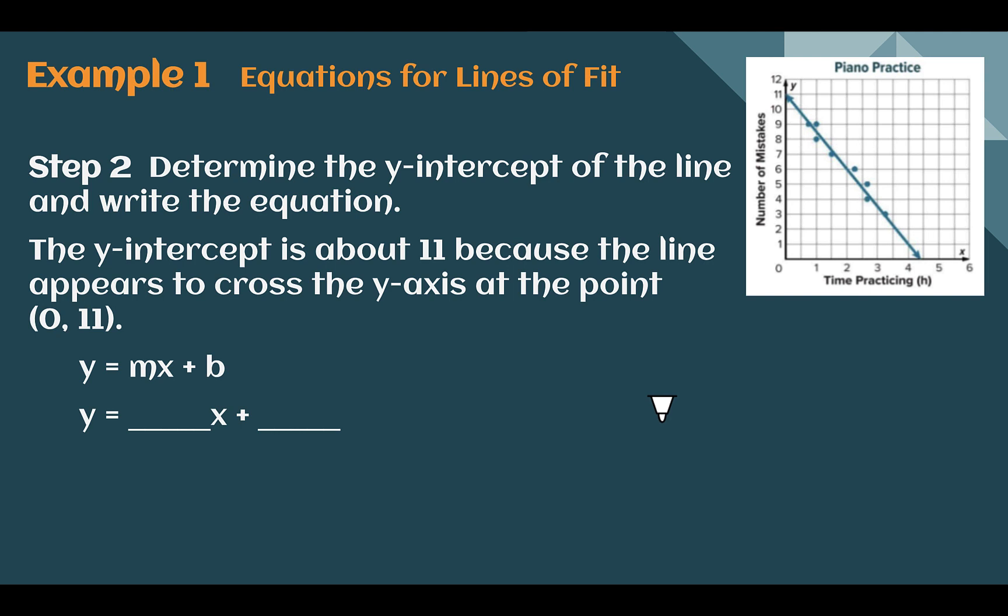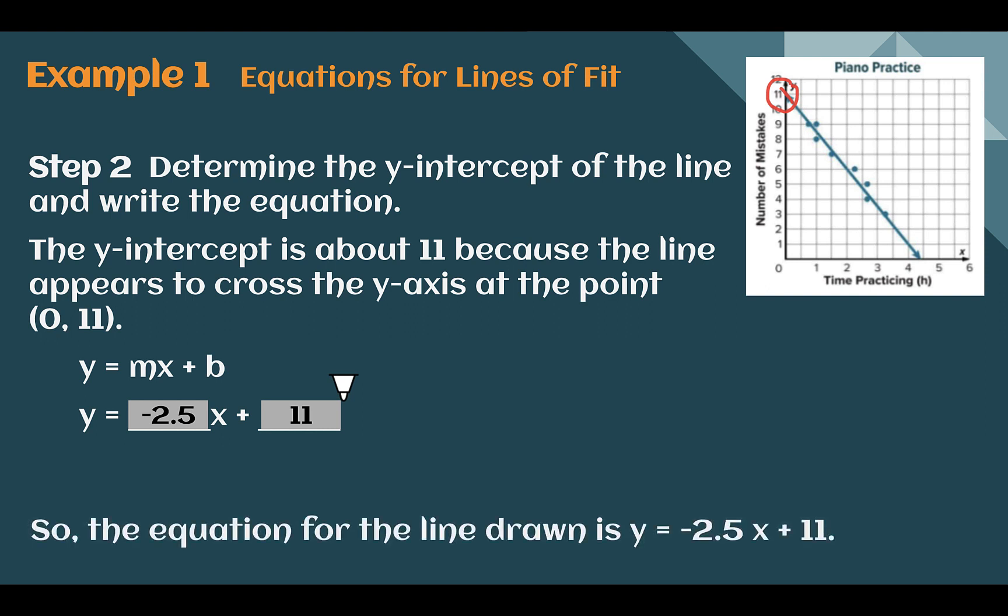Now that we have our slope, let's determine our y-intercept. So we're looking, where does it cross? It appears to cross about 11. We're going to make our best estimate here. So we're saying at 11. Later when you're doing examples on your own, if you think it crosses at 10.95, go for it. Somewhere close to what you see. So let's just use 11 here. That's where it appears to cross. Now that we have our slope and our y-intercept, let's plug them back in. So our slope was negative 2.5. That goes in front of x. And 11 was our y-intercept. So these two things together, my slope-intercept form for the line drawn would be y equals negative 2.5x plus 11.